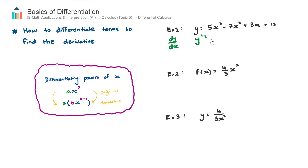Let's differentiate the four terms. For 5x³: the three comes out the front and we subtract one from the power, giving us the first term differentiated. For the second term, negative seven stays at the front, the two comes out the front of x, and we subtract one from the power — that's the second term differentiated.